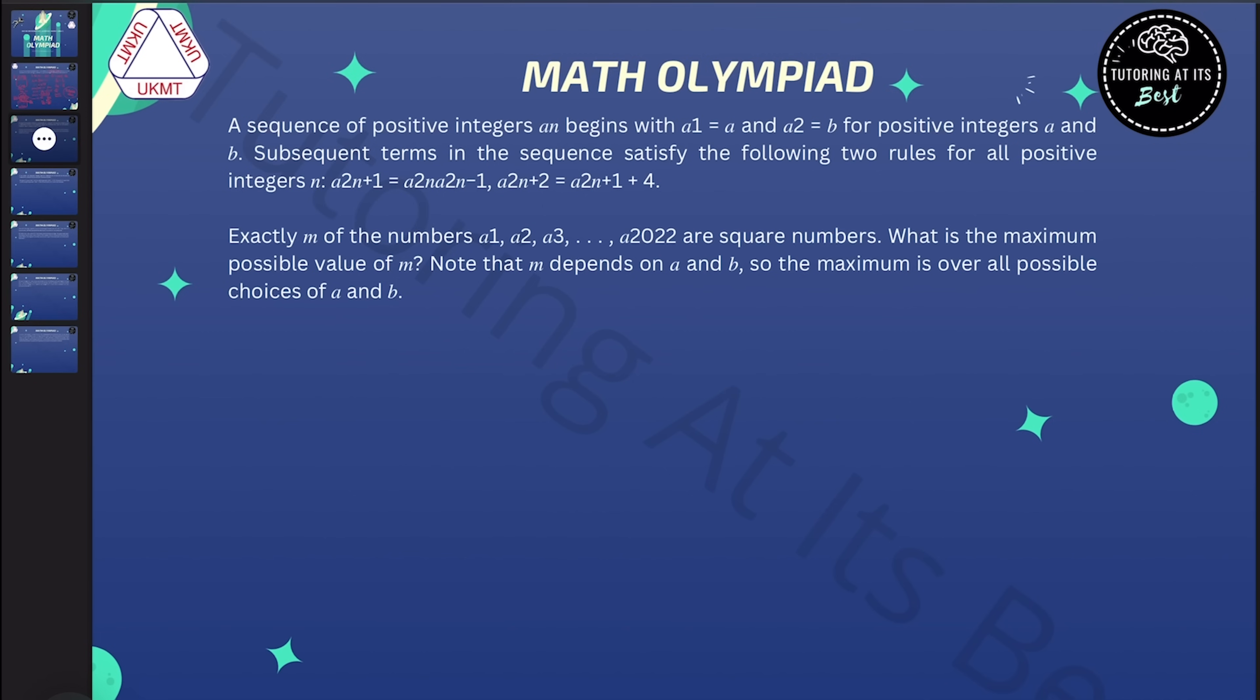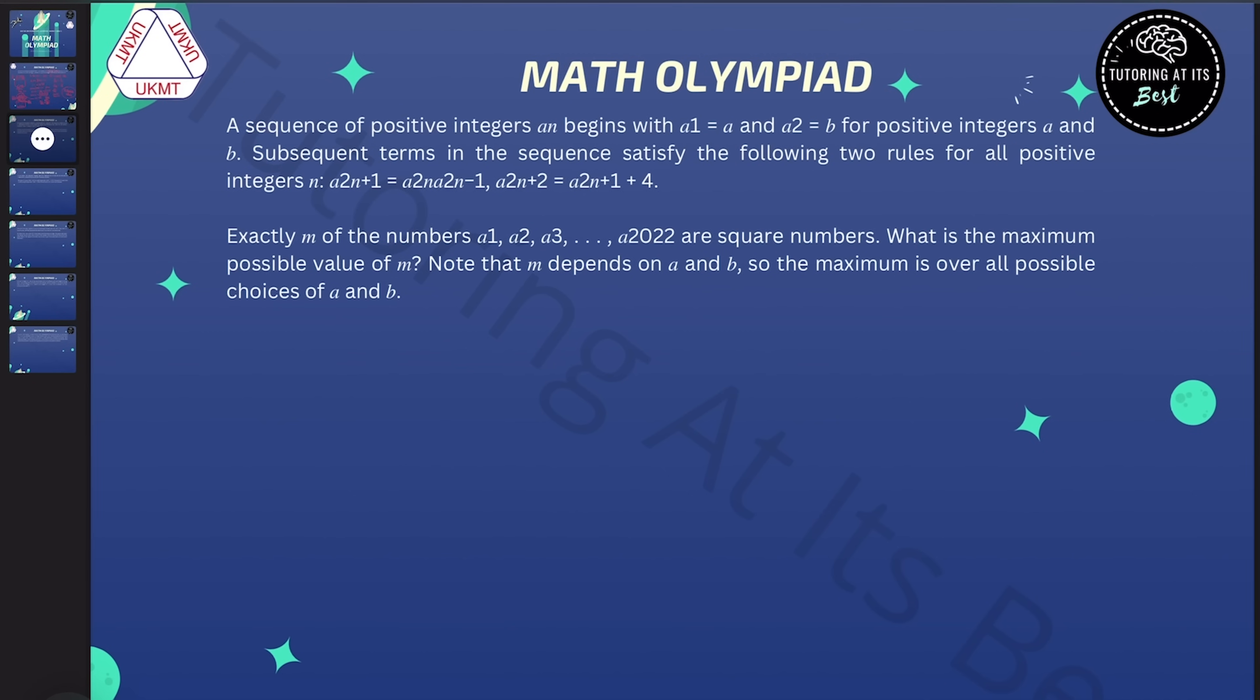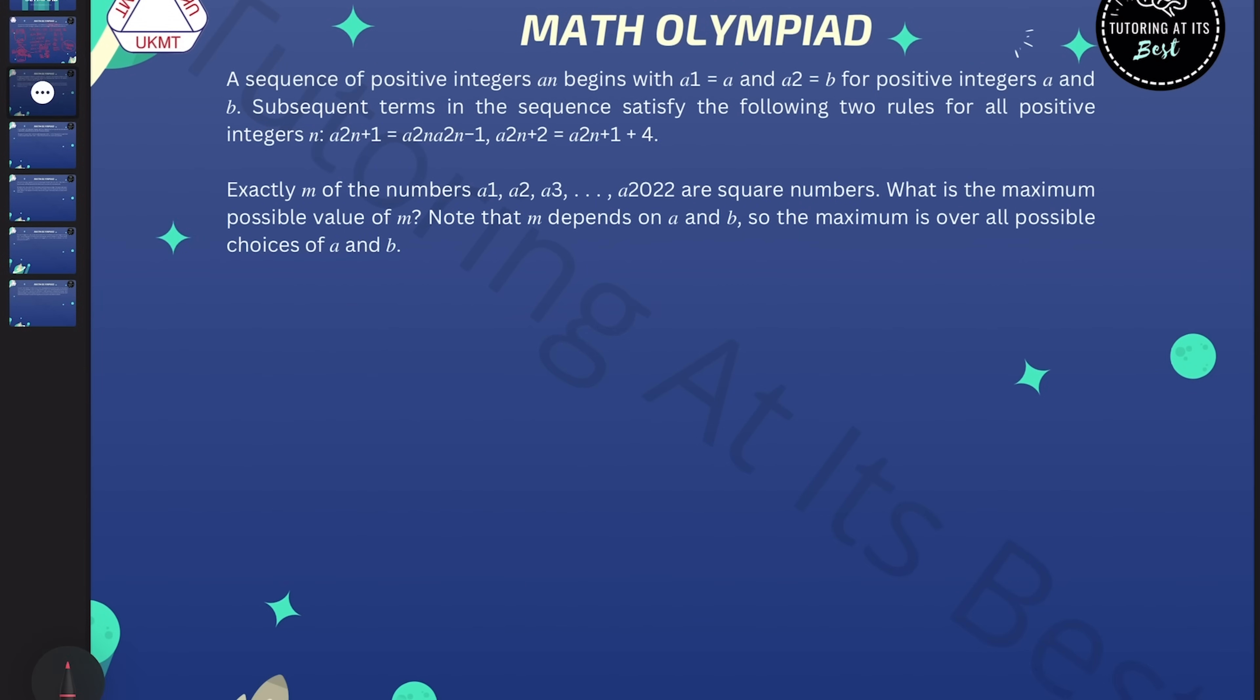So problem two. A sequence of positive integers an begins with a1 equals a and a2 equals b for positive integers a and b. Subsequent terms in the sequence satisfy the following two rules for all positive integers: a2n plus 1 equals a2n times a2n minus 1, and a2n plus 2 is equal to a2n plus 1 plus 4.